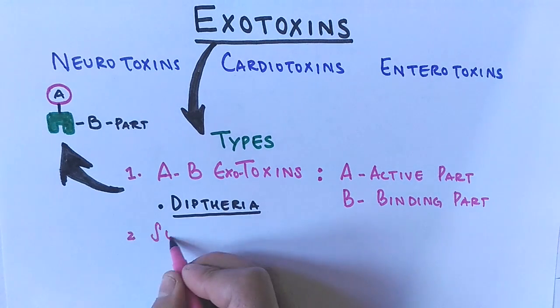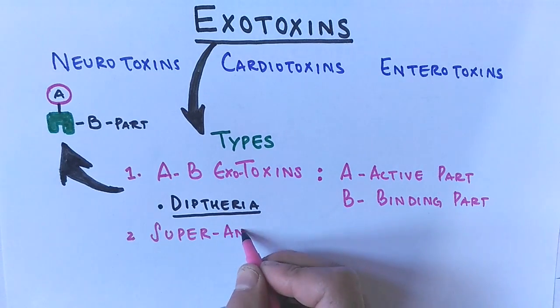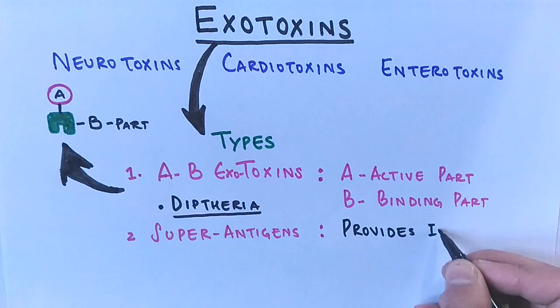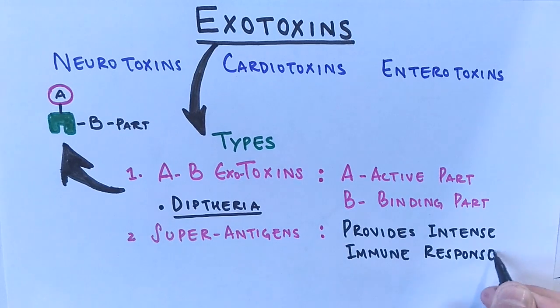The second type of exotoxins are called super antigens. These are protein molecules produced by pathogenic bacteria which cause intense immune response, like non-specific T cell activation and massive cytokine release.